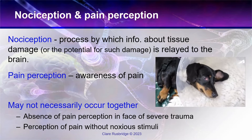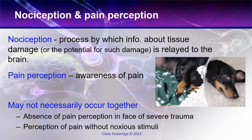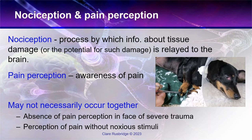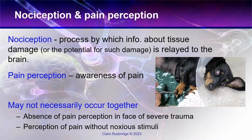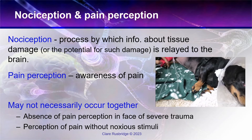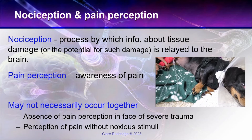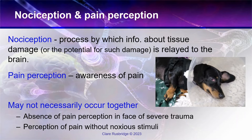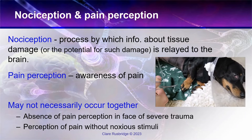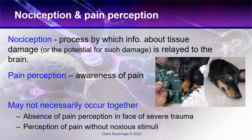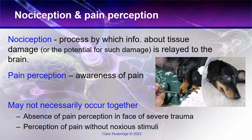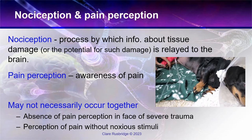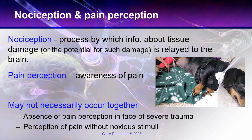An example of nociception occurring without feeling pain is severe trauma or fear. If you were being chased by a lion and the lion ripped your leg off, you might still try to escape without feeling the trauma, because adrenaline would override that pain impulse. Conversely, in the case of neuropathic pain, you can have perception of pain without any noxious stimuli.